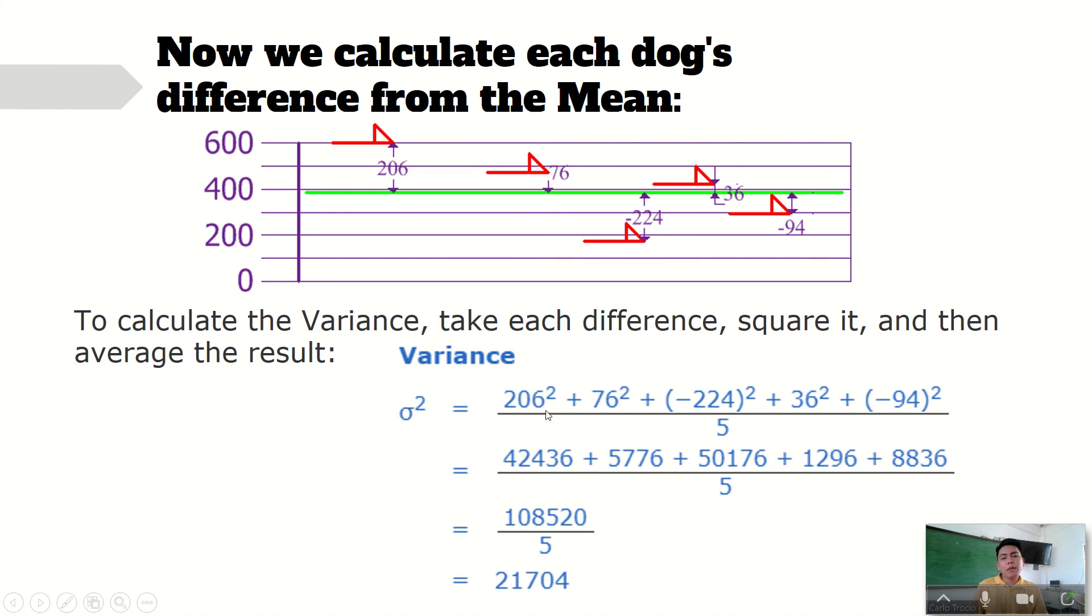And so on. And then you are going to square it. You will have 206 times itself, or squared, and that's 42,436 plus this, this, this, and this.